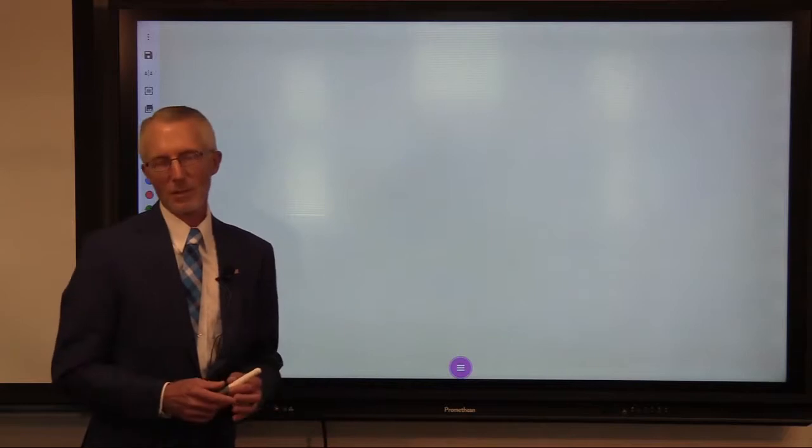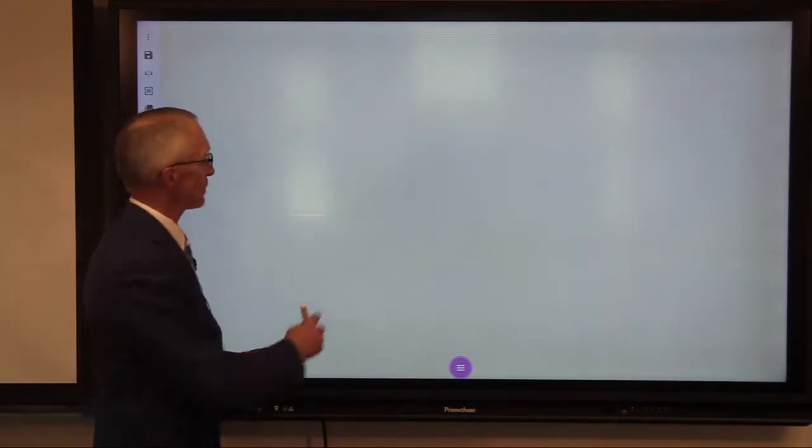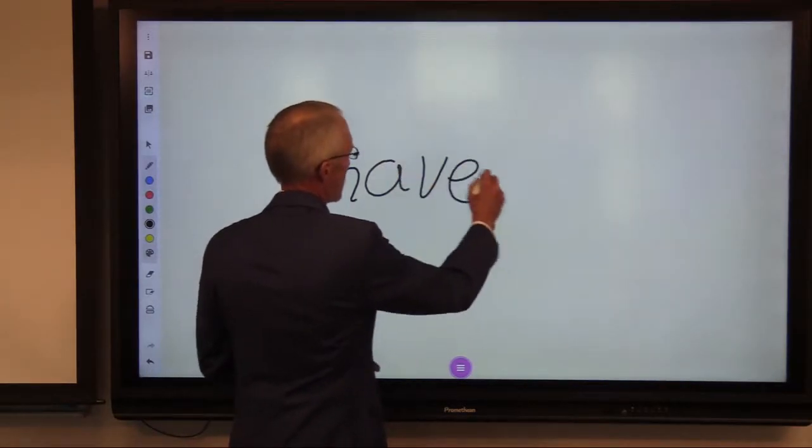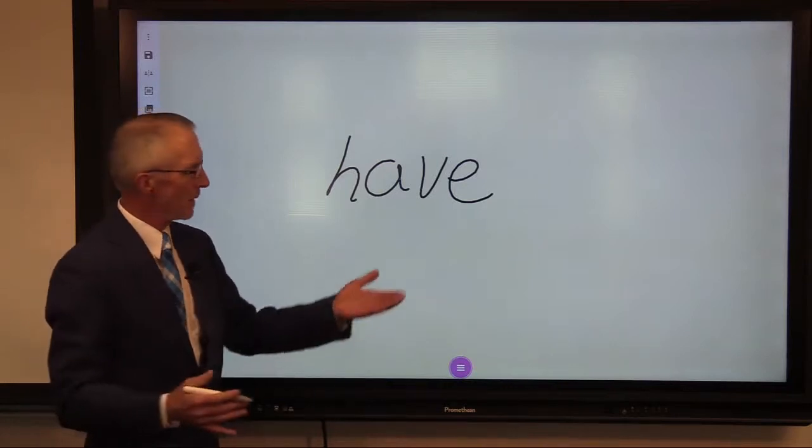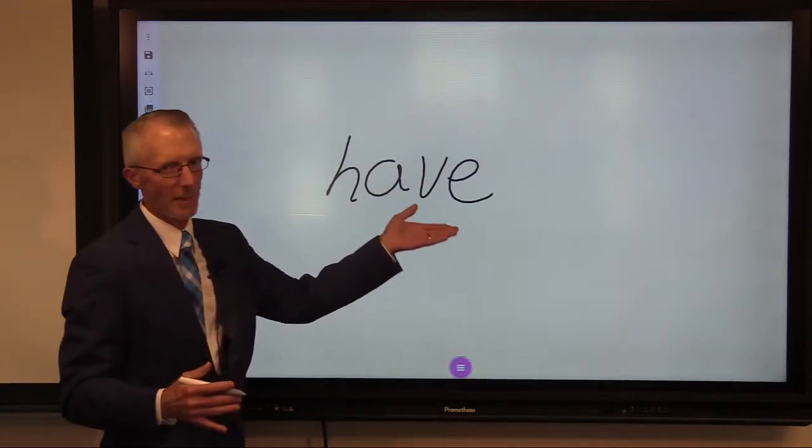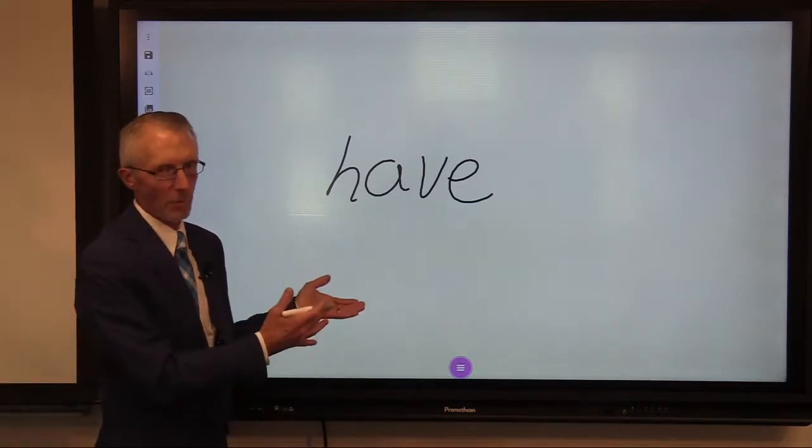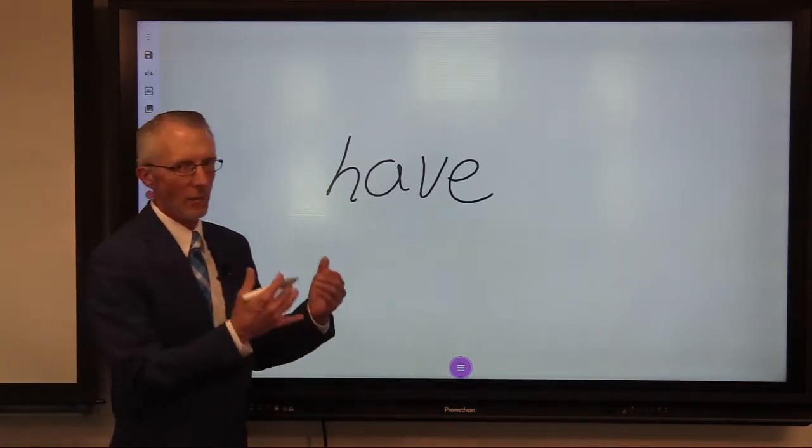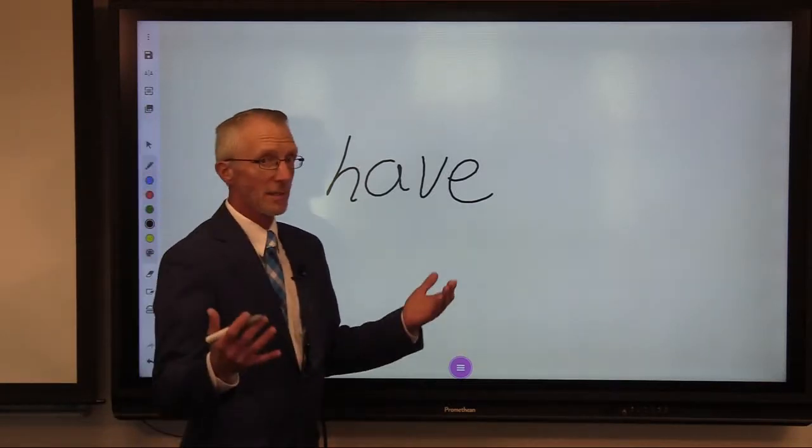The first one we're going to take a look at is the single non-syllabic E. If we have the word H-A-V single non-syllabic E, we call this a single non-syllabic E because it's not representing any pronunciation. Some people refer to it as a silent E. In our reading clinic, we've referred to it as a single non-syllabic E, and we want to add a suffix.